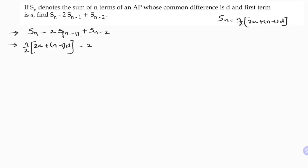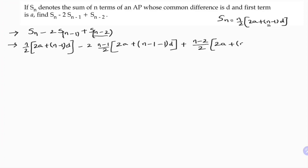In place of n, we have n minus 1. So S(n-1) is (n-1)/2 into (2A plus (n-1 minus 1) into D), which is (n-1)/2 into (2A plus (n-2)D). Then plus S(n-2), where in place of n we have n minus 2, so (n-2)/2 into (2A plus (n-2-1)D).